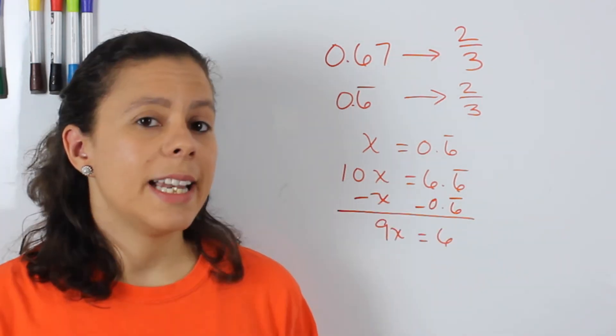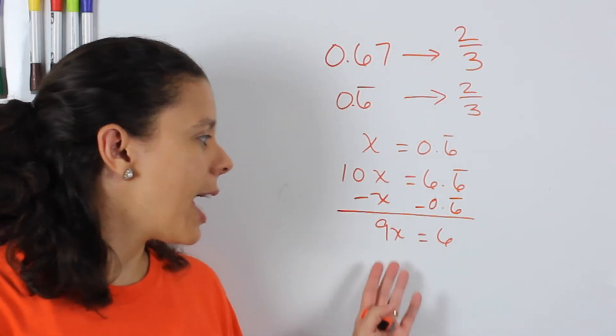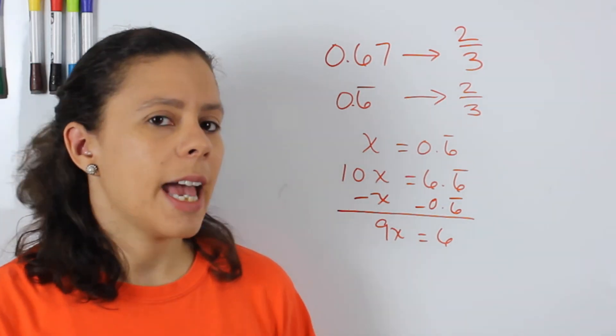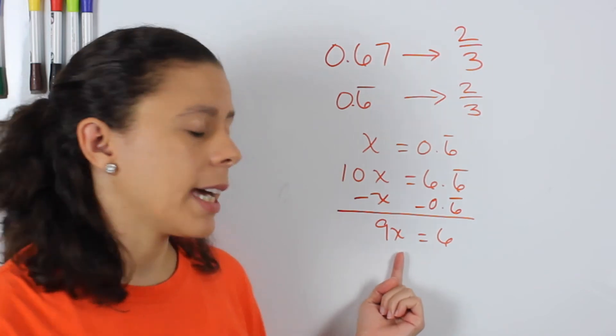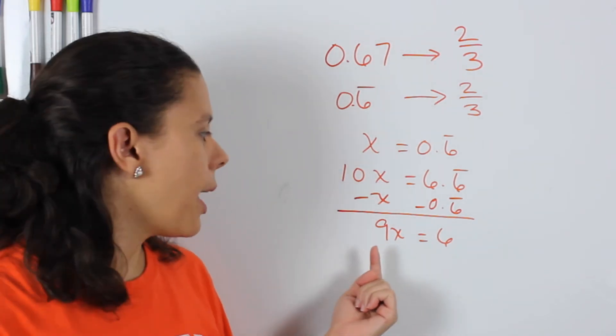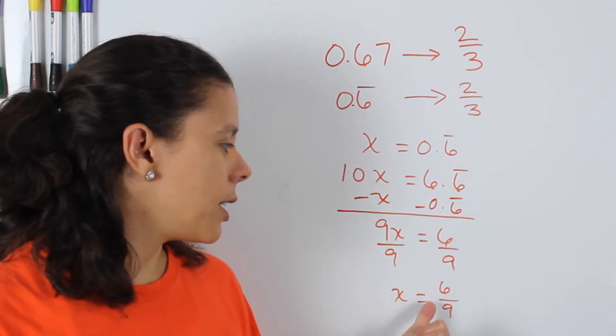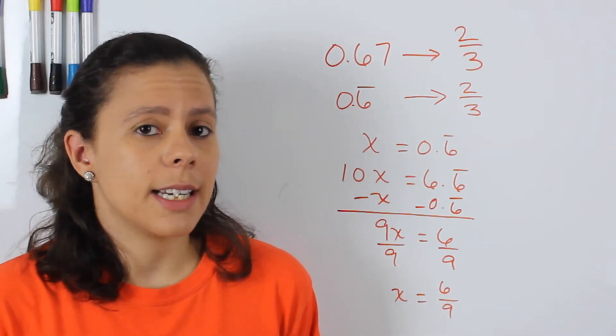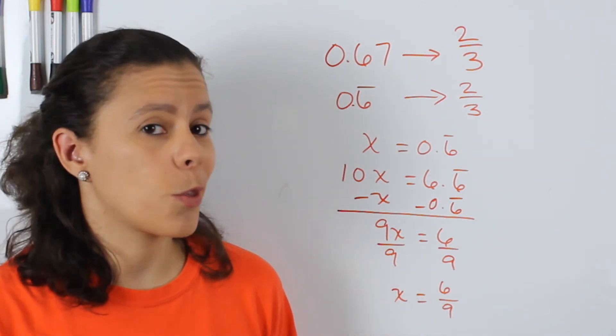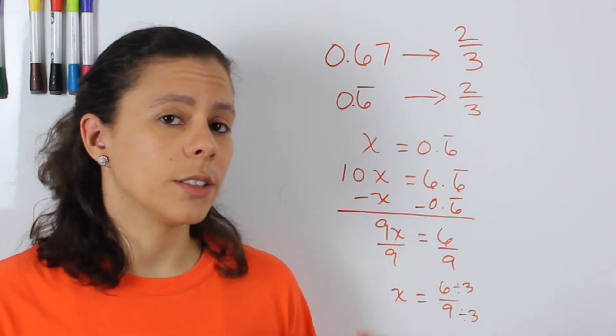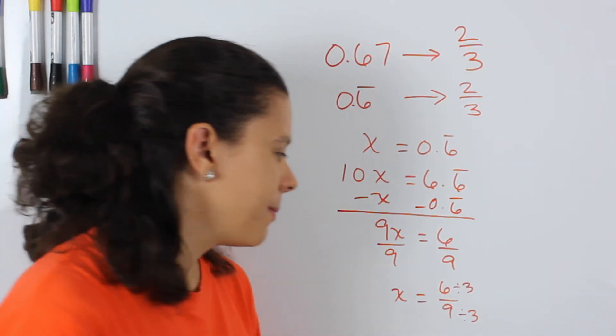I hope that makes sense. Now that is going to be 9x equals to 6, and we know that in order for us to leave the x alone, we have to divide by whatever number is being multiplied by it. Now x is equal to 6 over 9. We know that 6 and 9 share a common factor, which is 3. So we divide by 3 on top and bottom, and we get 2 thirds.